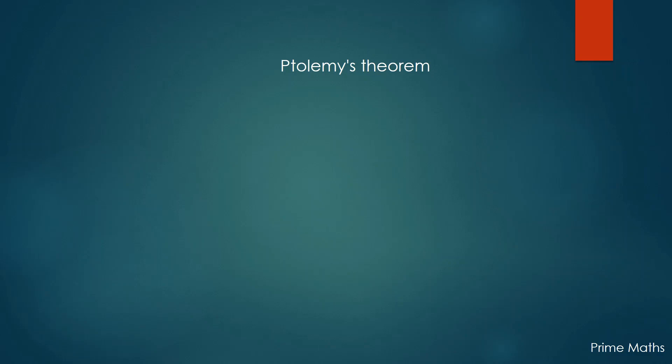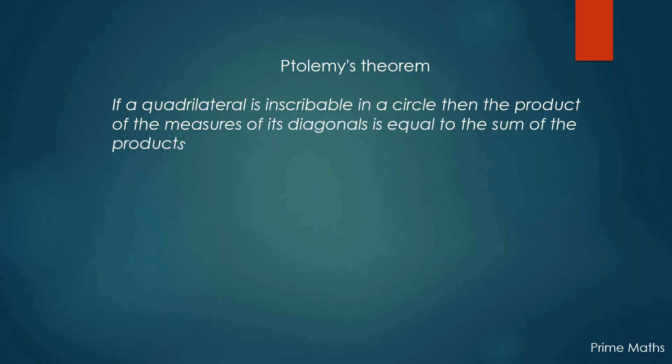The statement goes as: if a quadrilateral is inscribable in a circle, then the product of the measures of its diagonals is equal to the sum of the products of the measures of the pairs of opposite sides.